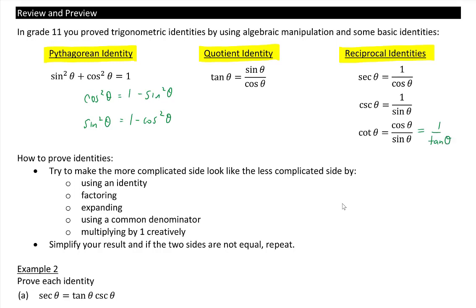How do you prove identities? You try to make the more complicated side look like the less complicated side, in most cases. Different ways you can do that: using an identity like the ones given above, you can try to factor the expression, expand, use a common denominator, or multiply by one creatively. We'll look at an example of that later.